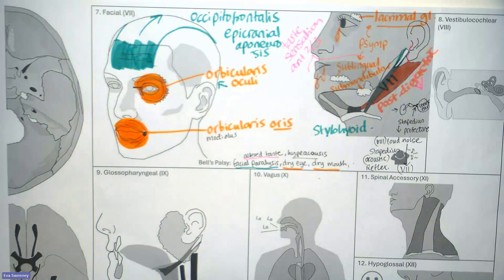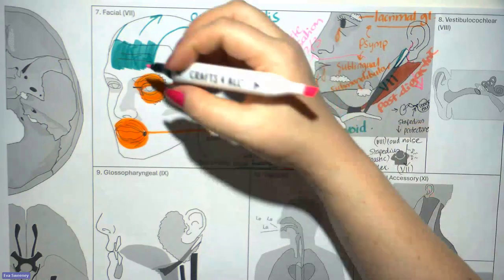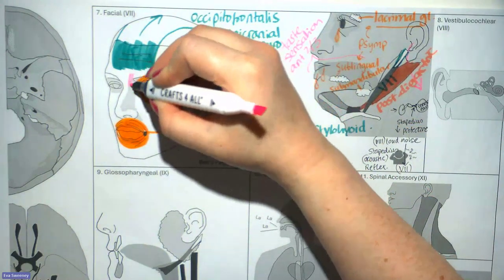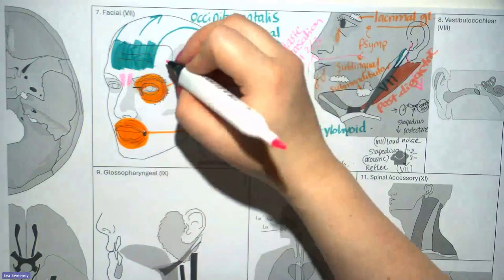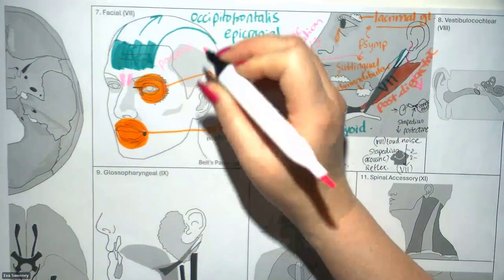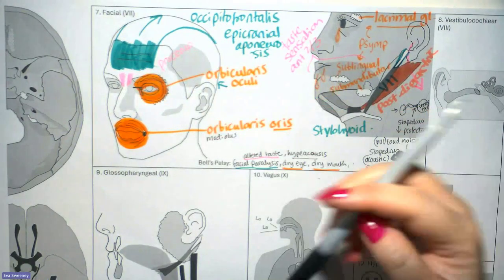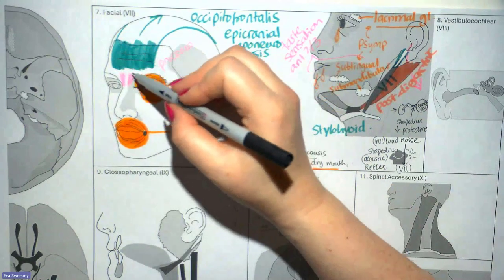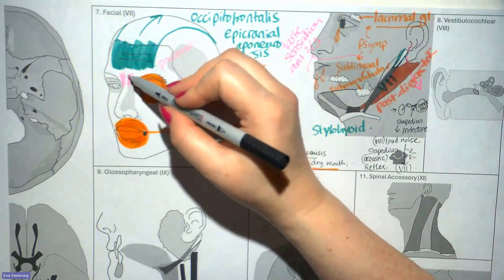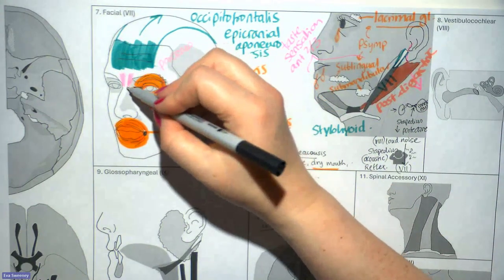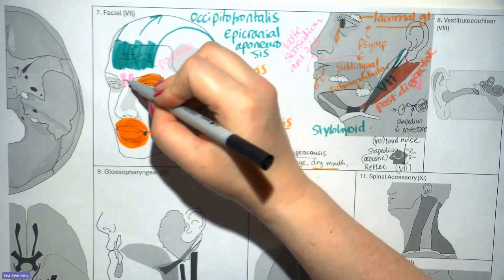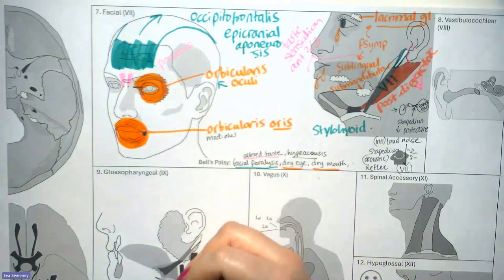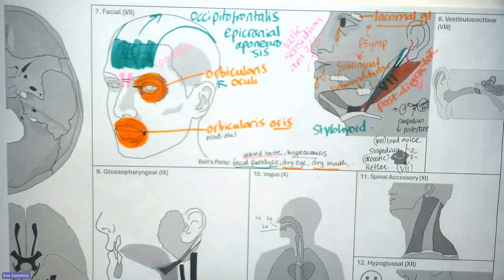Adding another small muscle running vertically here is the procerus. The procerus pulls the skin of the forehead down towards the nasal bone, producing transverse wrinkles between the eyes — it helps with frowning.